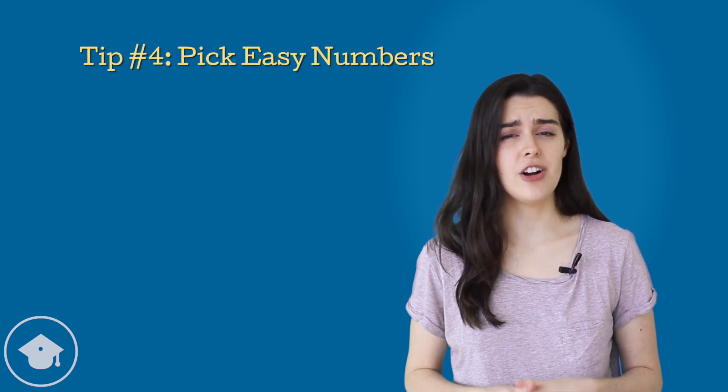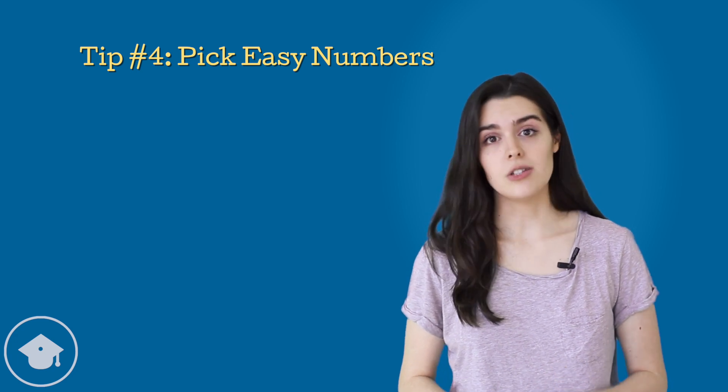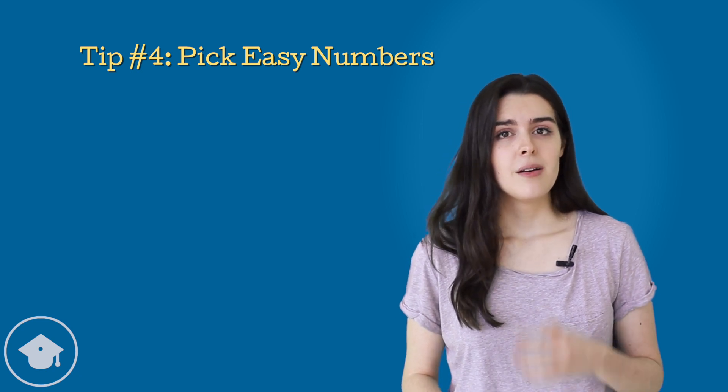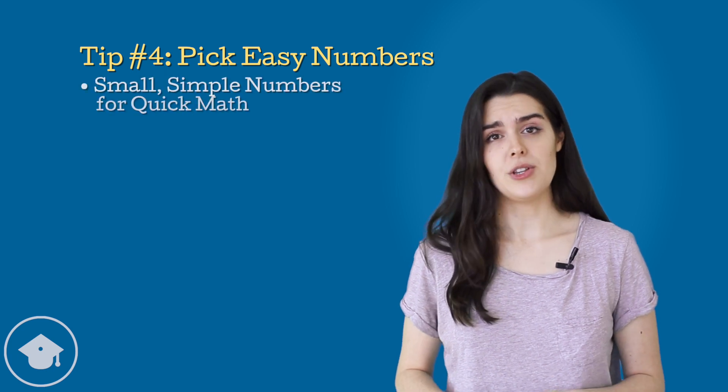Tip number four, pick easy numbers. Because there is no calculator on the GMAT quant section, you'll be doing all of this math in your head or on scratch paper. This means there is a lot of room for error as well as for wasting time. Make the math harder to mess up and faster by using small, easy to work with numbers.